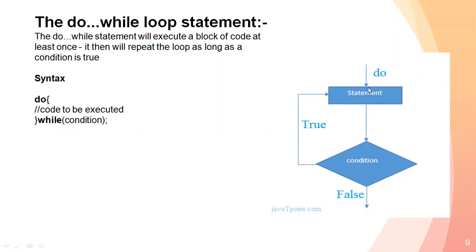In the flowchart for do-while: the statement executes first, then the condition is checked. If the condition is true, it continues the loop. When the condition becomes false, the loop ends.